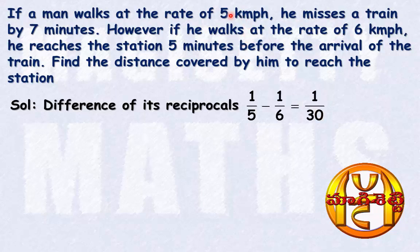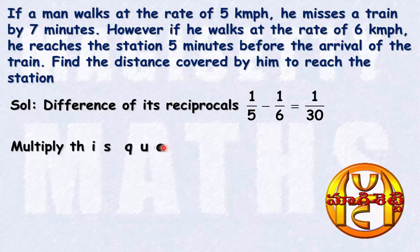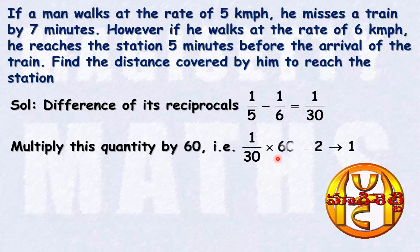Here, speeds are given in kmph and times are given in minutes, so we have to convert this hour into minutes. To convert this into minutes, we multiply this quantity by 60. By multiplying 1/30 by 60, we get 2. Let this be equation number 1.